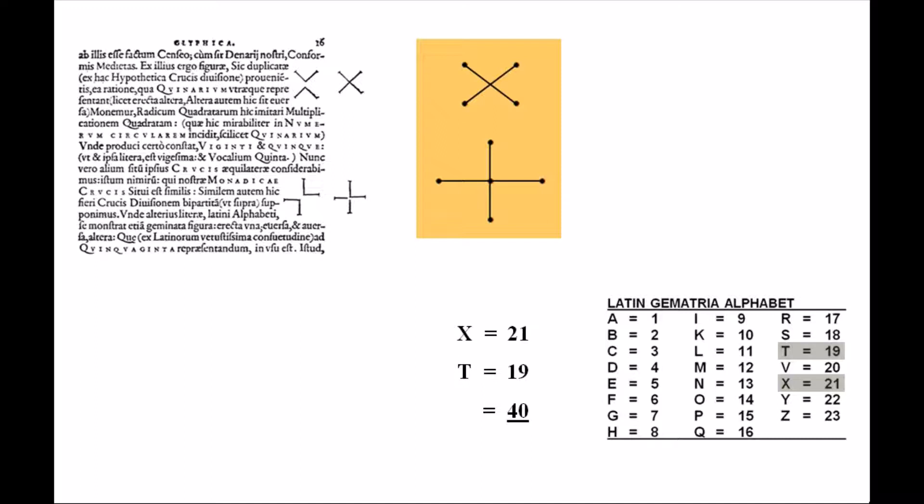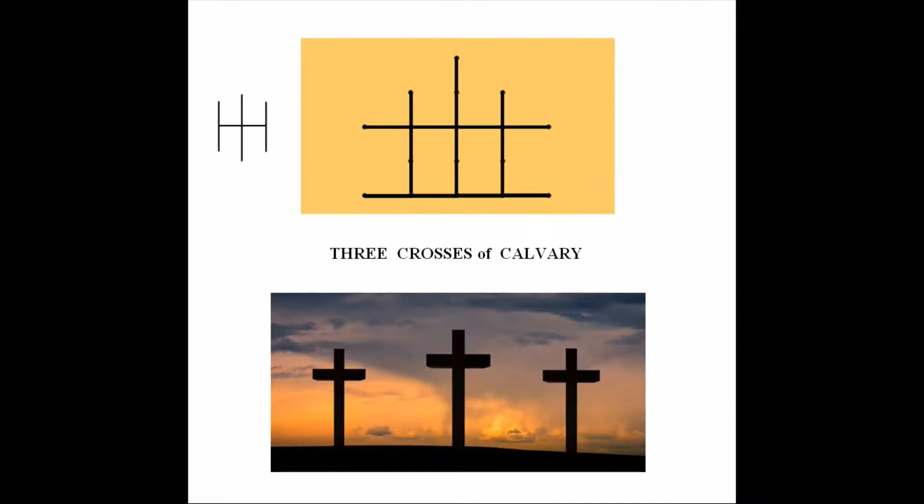Next are the two crosses. In Monas Hieroglyphica, John Dee explains how these crosses are made. One is shaped like an X, the other like a T, or tau. With Gematria, X equals 21, and T equals 19. Added together, we get 40, de Vere's code number.